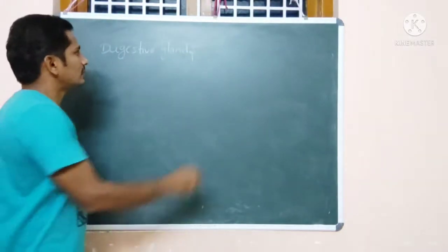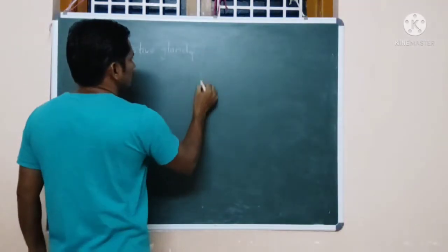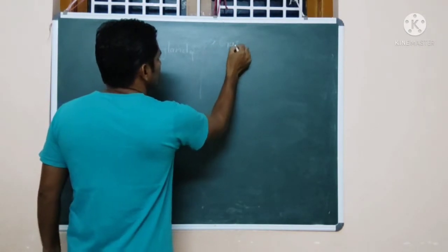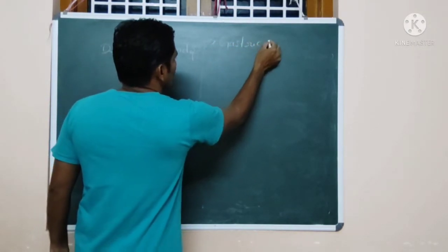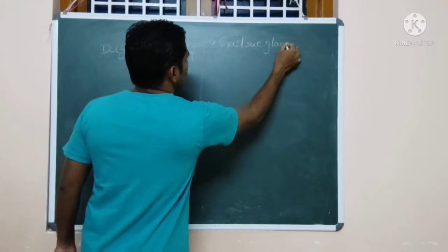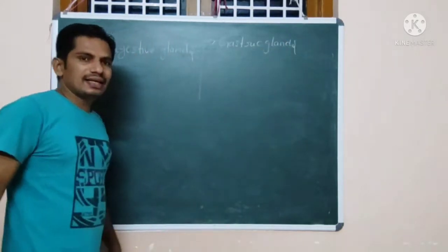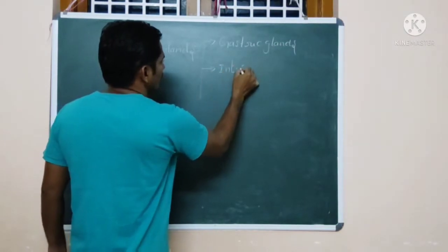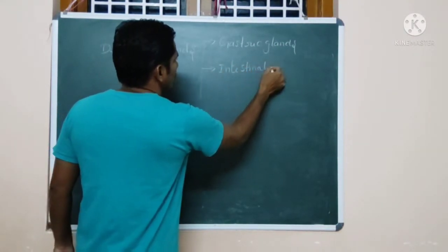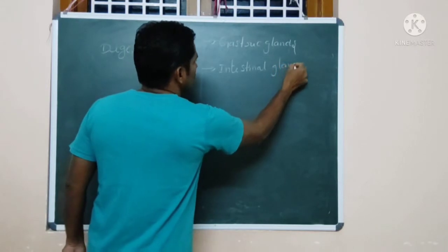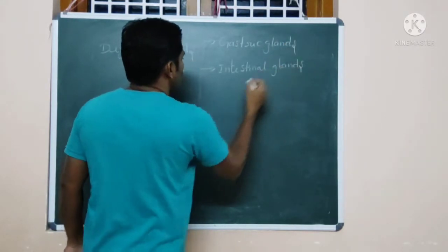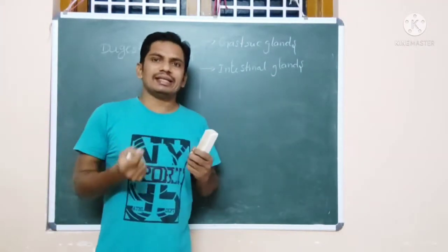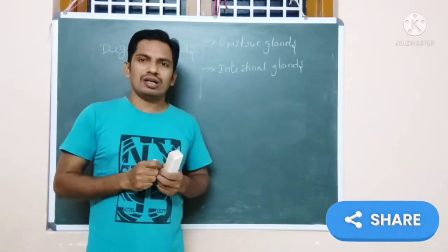These glands are of different kinds. The first one is the gastric gland, and the second one is the intestinal gland. These two are present inside the wall of the alimentary canal.